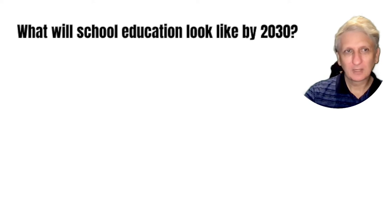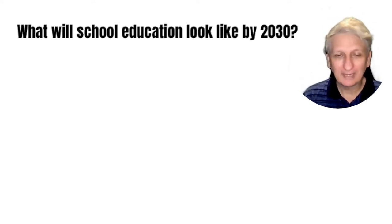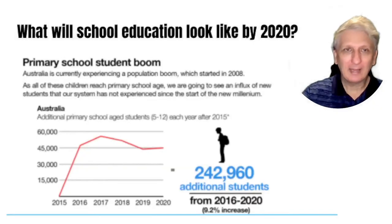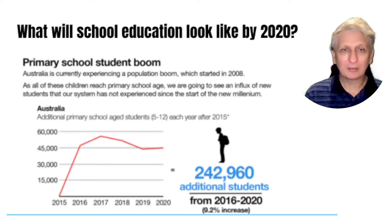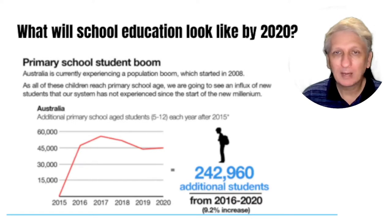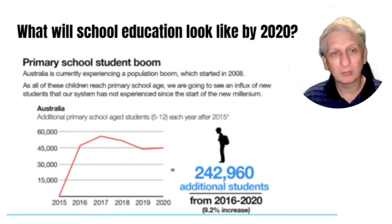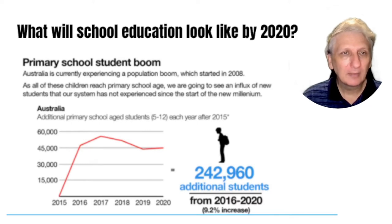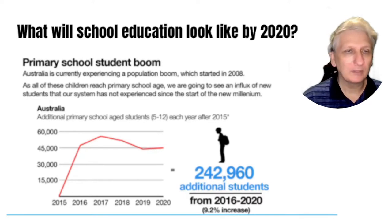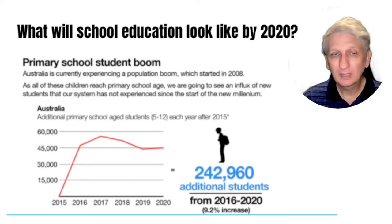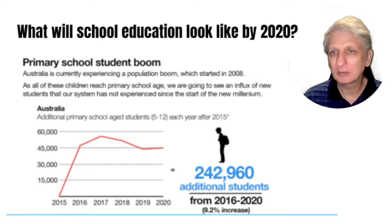Back to research. One common area of prediction is what's going to happen in schools — what will school education be like in 2030? We gather data to develop trends and then make forecasts. For example, looking at 2015 and 2016, the trend in primary school student numbers was going up very strongly. It has plateaued, but there is still a boom compared to pre-2015, which is having a big impact on universities and on school planning.